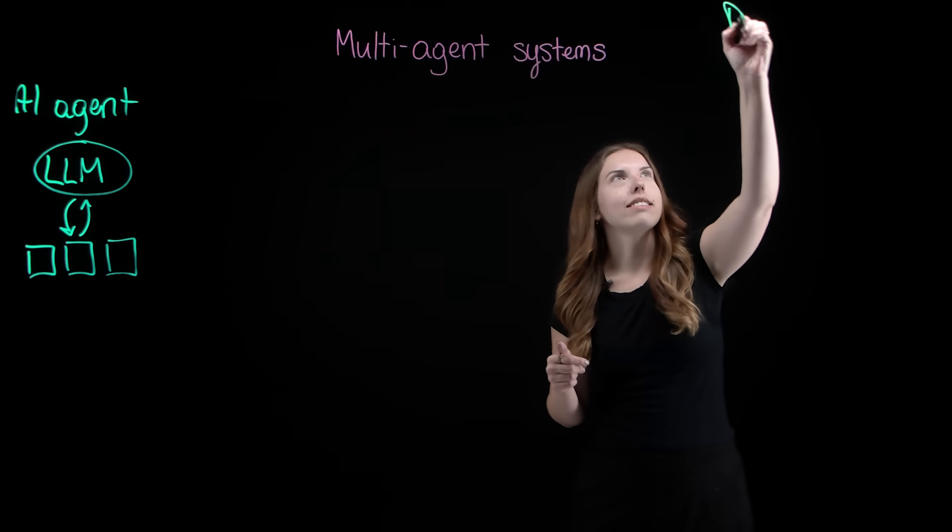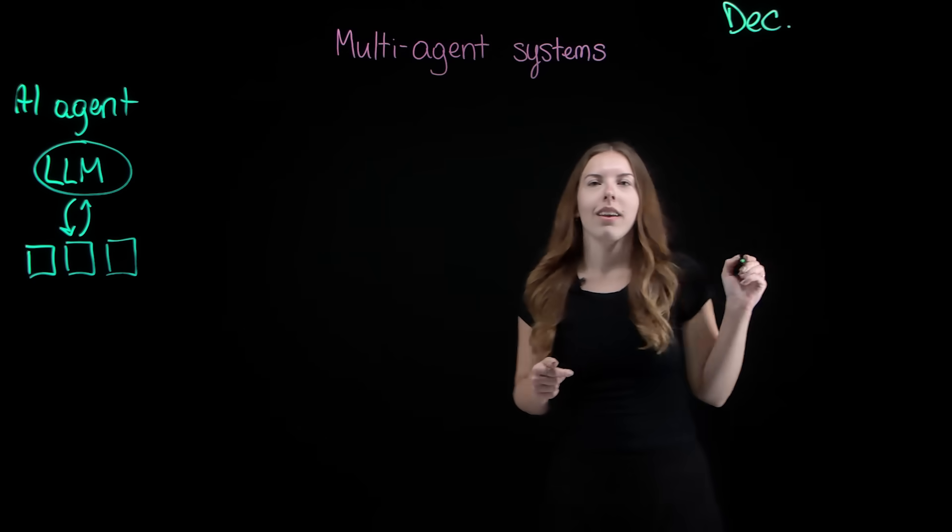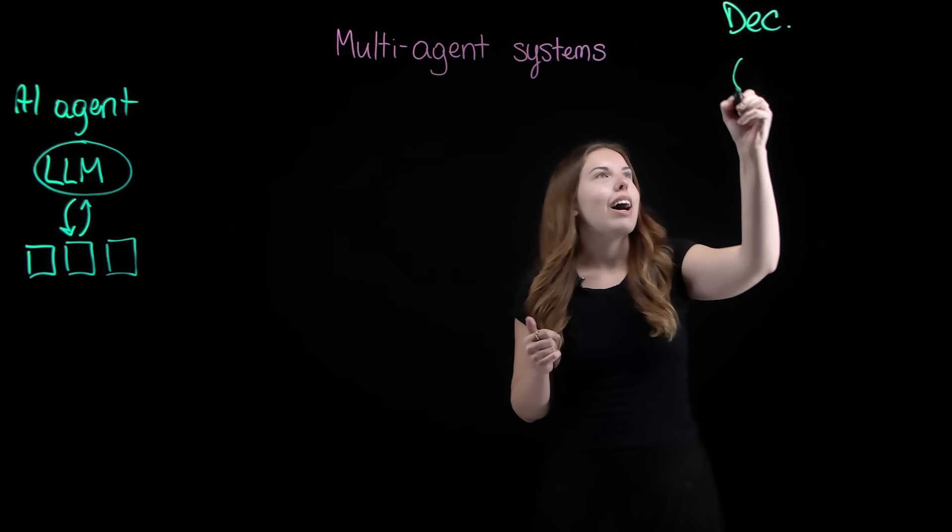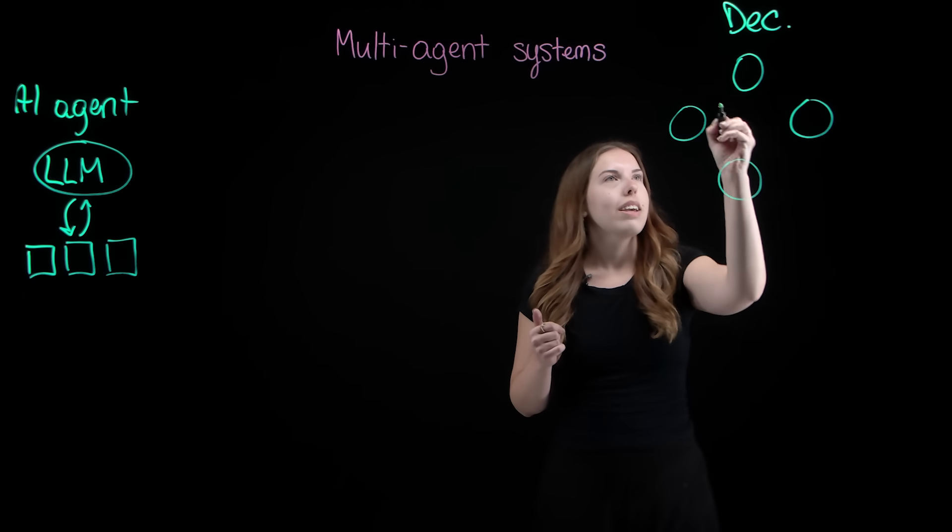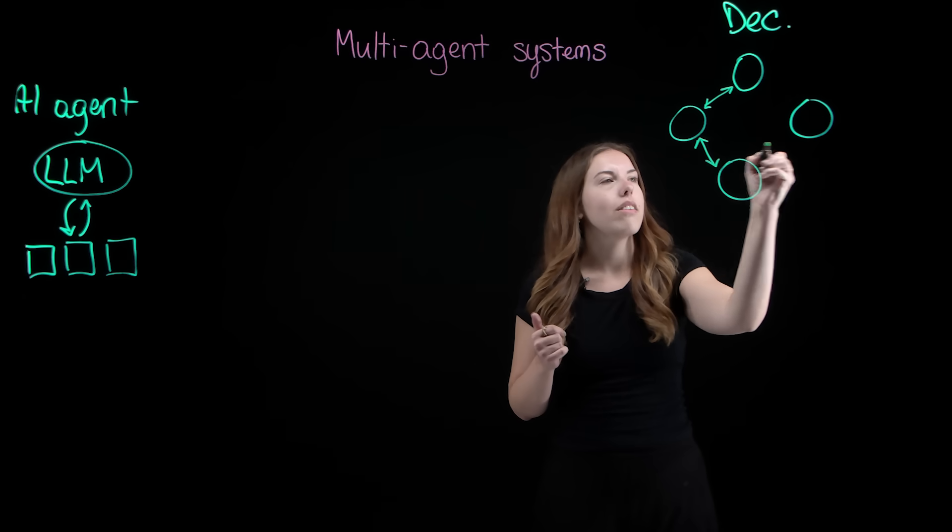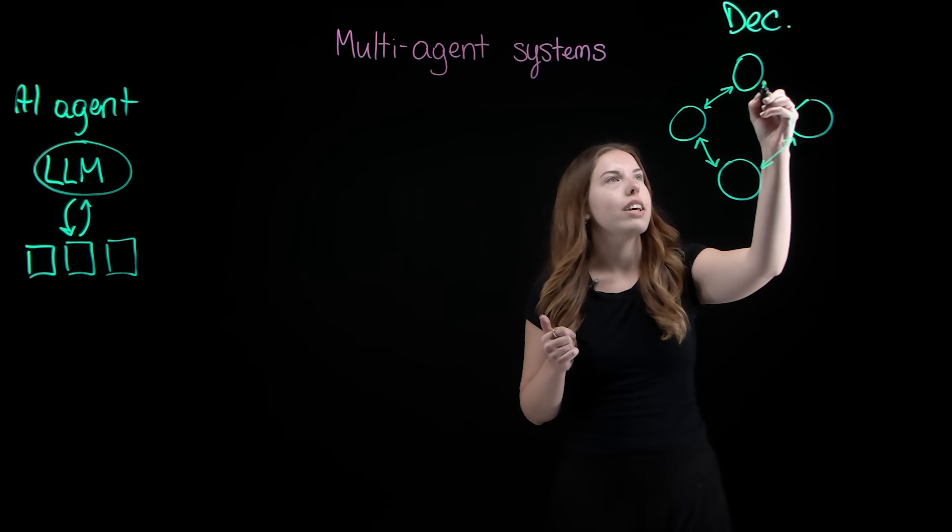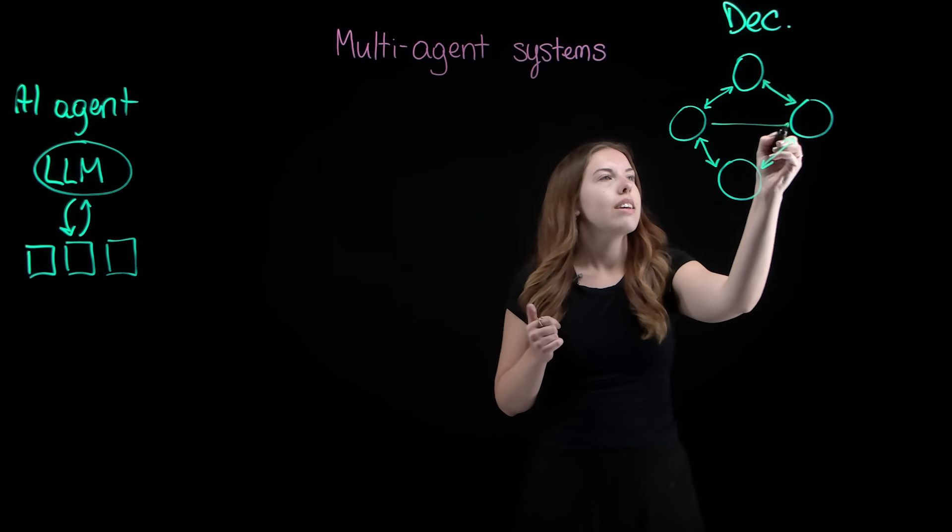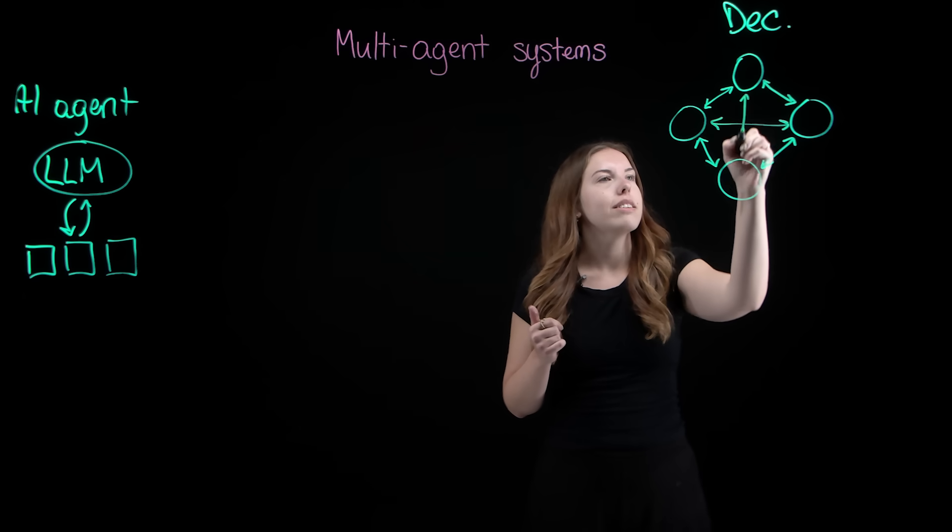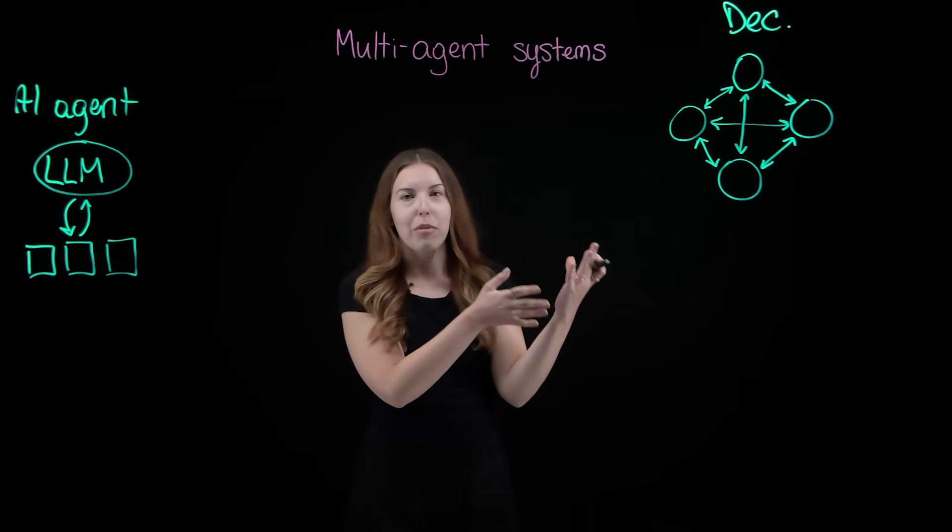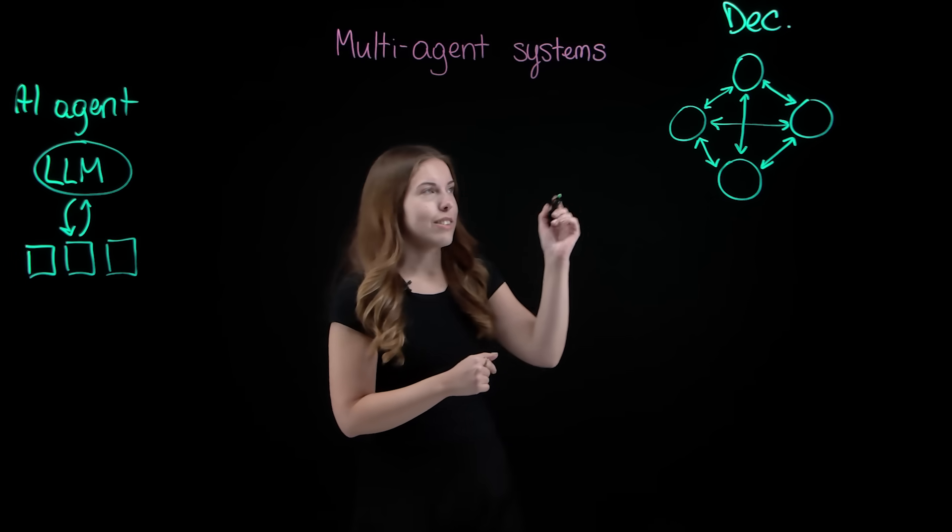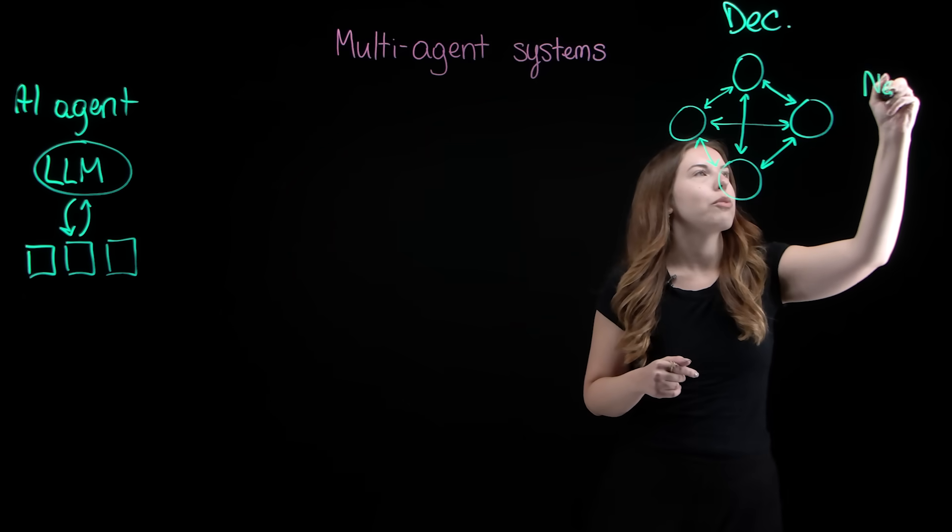What do these structures look like? Let's start with a decentralized network. Let's imagine you have several AI agents. Each of them can communicate with one another to share information and resources to help inform their decision process, each operating with the same amount of authority. This is often referred to as an agent network.